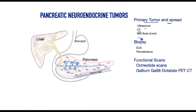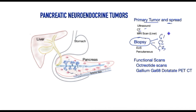Unlike other tumours, it is essential to biopsy a pancreatic NET so that we can know what grade the tumour is. G1 and early G2 are good prognosis, and G3 has poor prognosis, which has direct implications on treatment options. The biopsy is obtained by way of an endoscopic ultrasound.